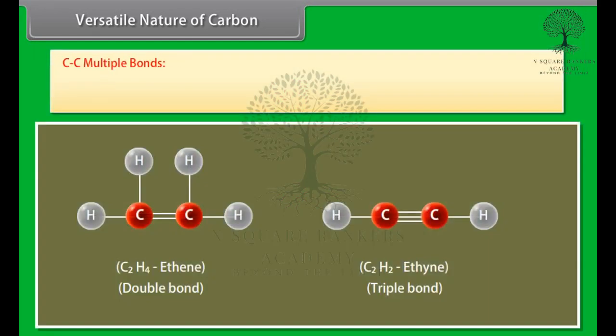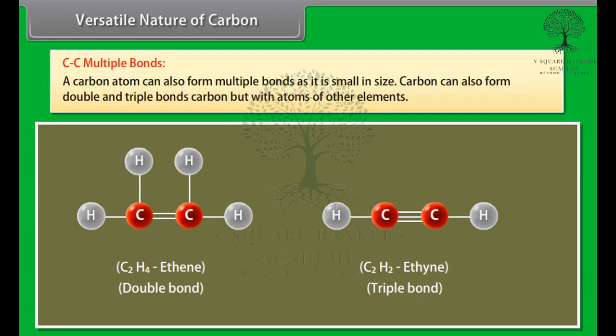Carbon-carbon multiple bonds. A carbon atom can also form multiple bonds as it is small in size. Double and triple bonds can also be formed with not only carbon but with atoms of other elements like oxygen, nitrogen, and so on. These multiple bonds provide a variety in the carbon compounds.